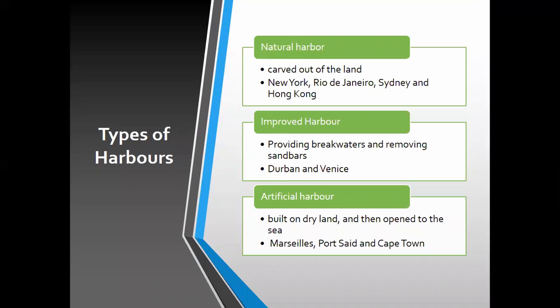There are three types of harbors: natural, improved, and artificial. Natural harbors are carved out of the land — just naturally formed — think New York, Rio de Janeiro, Sydney, and Hong Kong. From a natural harbour you can improve them by providing breakwaters and removing sand bars, as in Durban and Venice. Then you get artificial harbors, which are purely built on dry land and then opened to the sea — Cape Town is a big example of that.